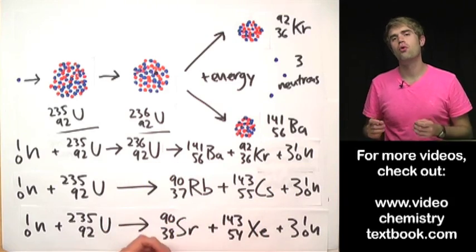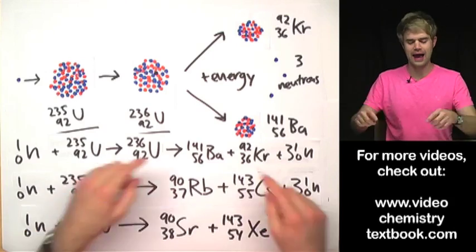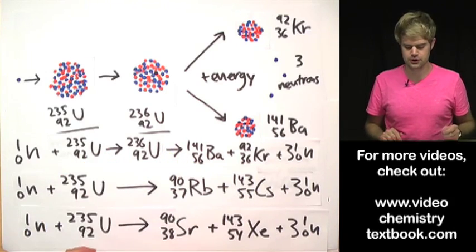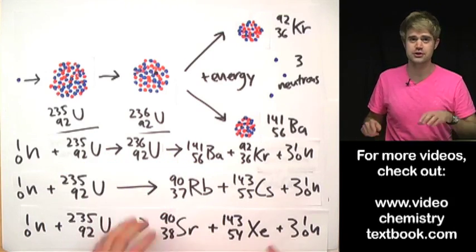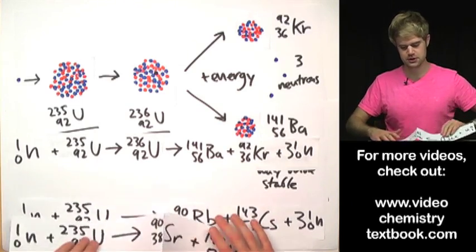This isn't super important. I'm just mentioning it to let you know that krypton and barium aren't the only atoms that can be produced by nuclear fission. So if you see one of these other reactions, it's not wrong. It's just showing a different way that uranium-236 can split.